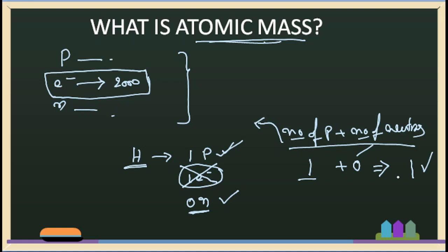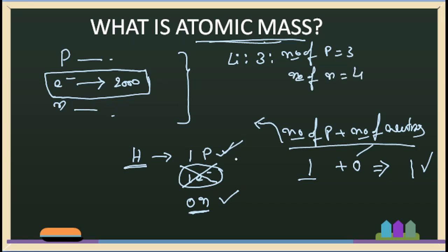For another example, lithium has an atomic number of 3, meaning 3 protons, and it has 4 neutrons. So the atomic mass of lithium is 3 plus 4, which equals 7. The atomic mass of lithium is 7.